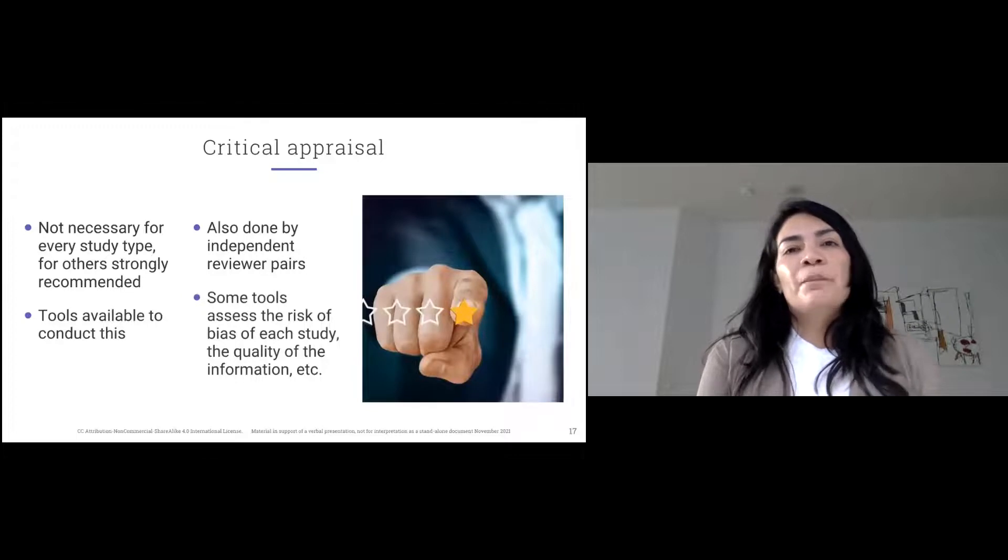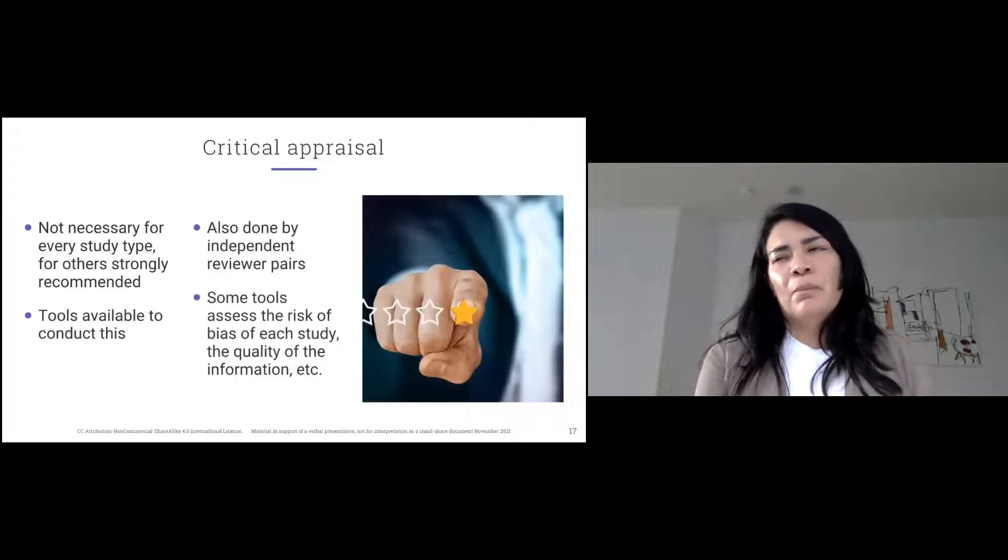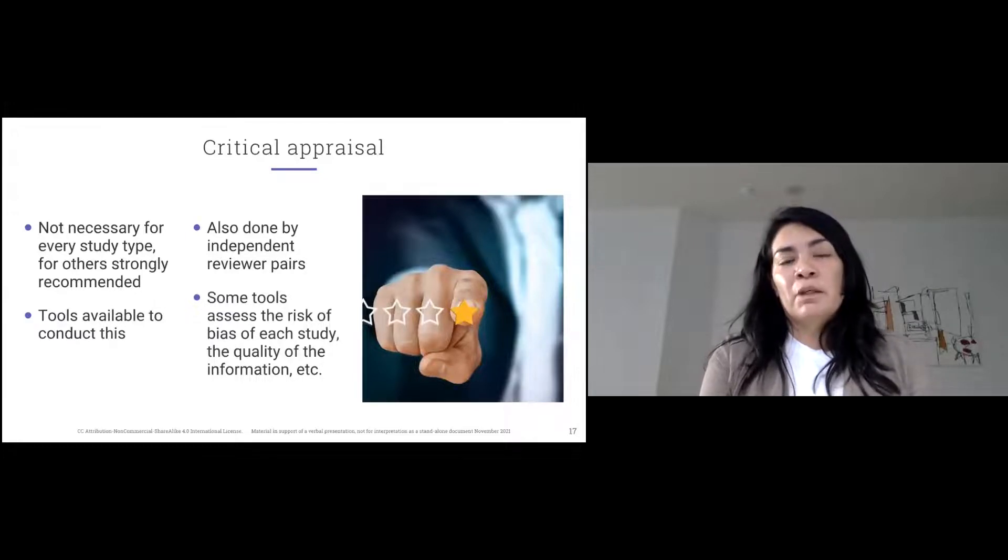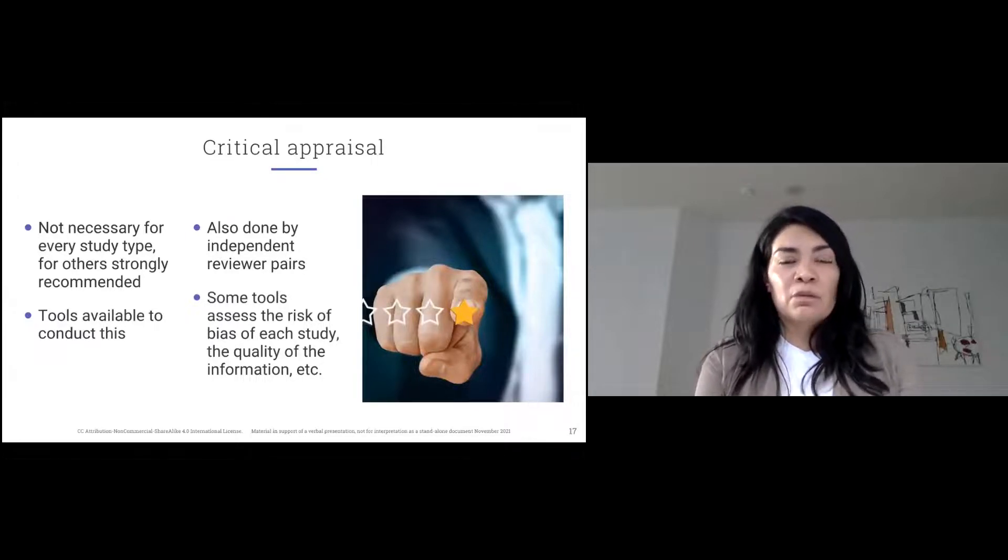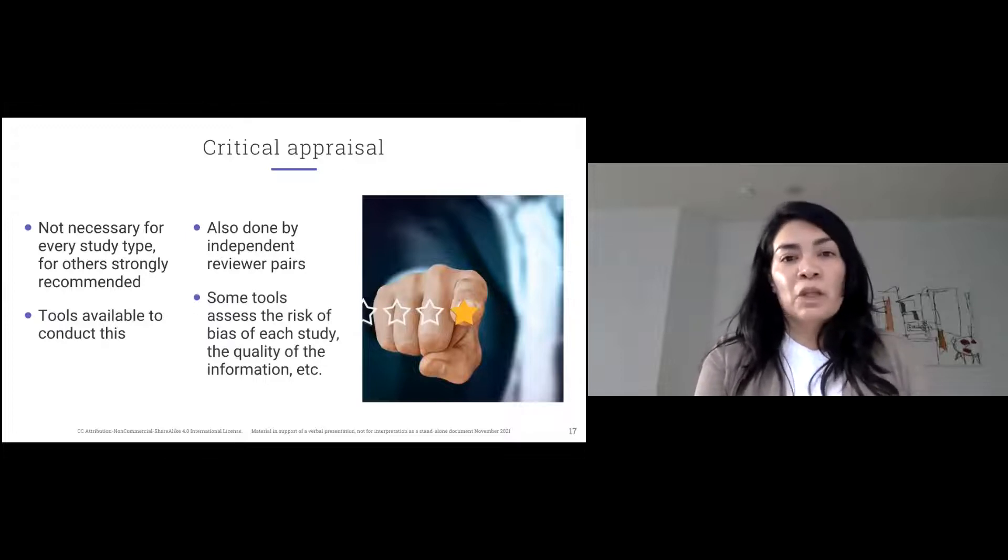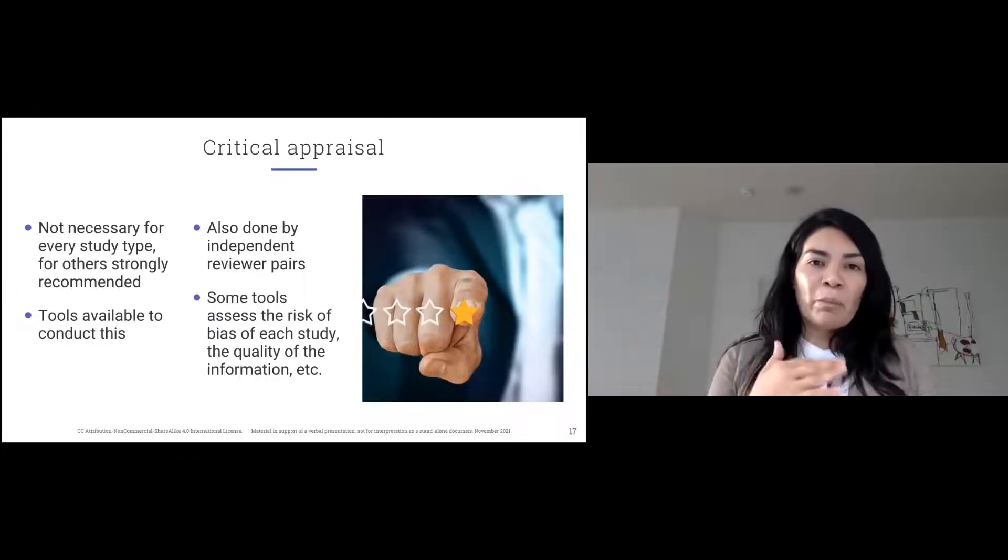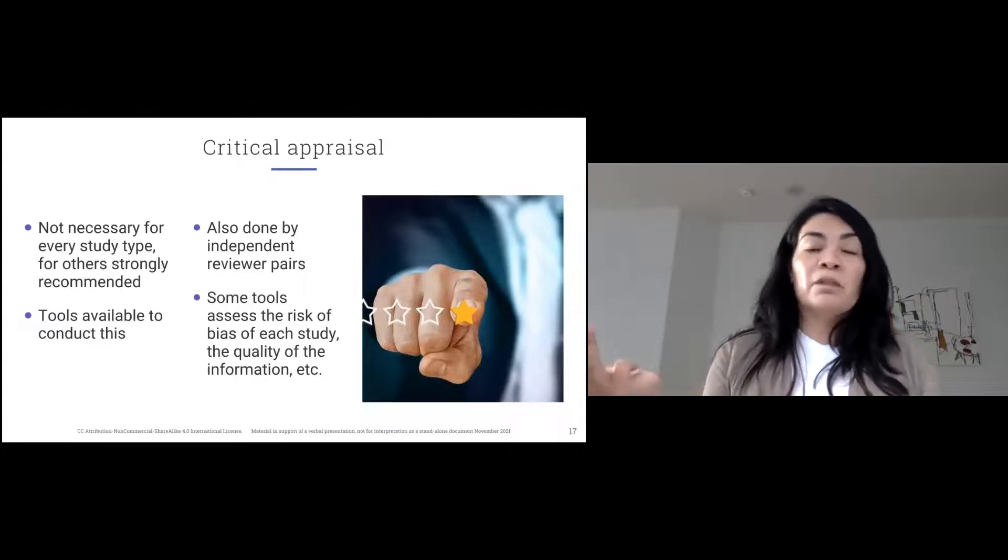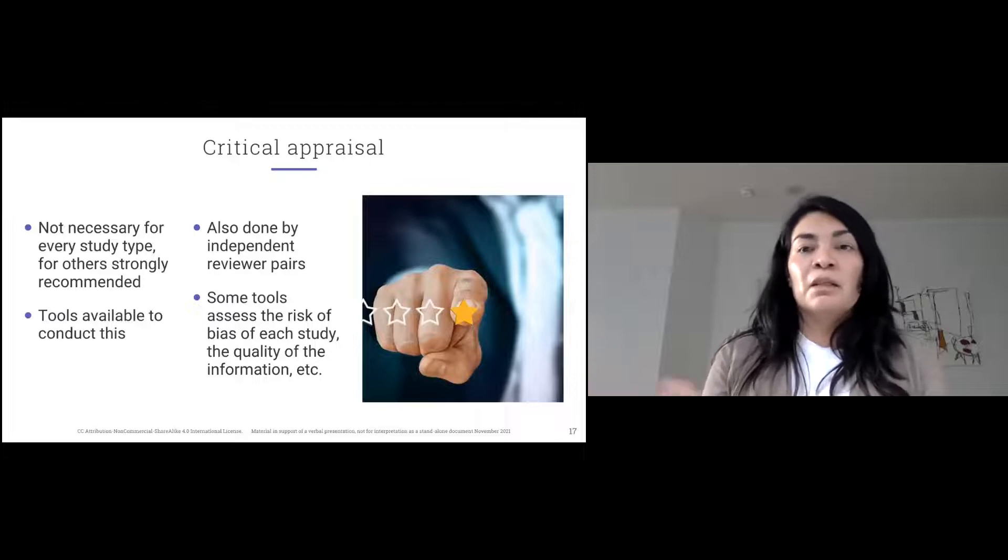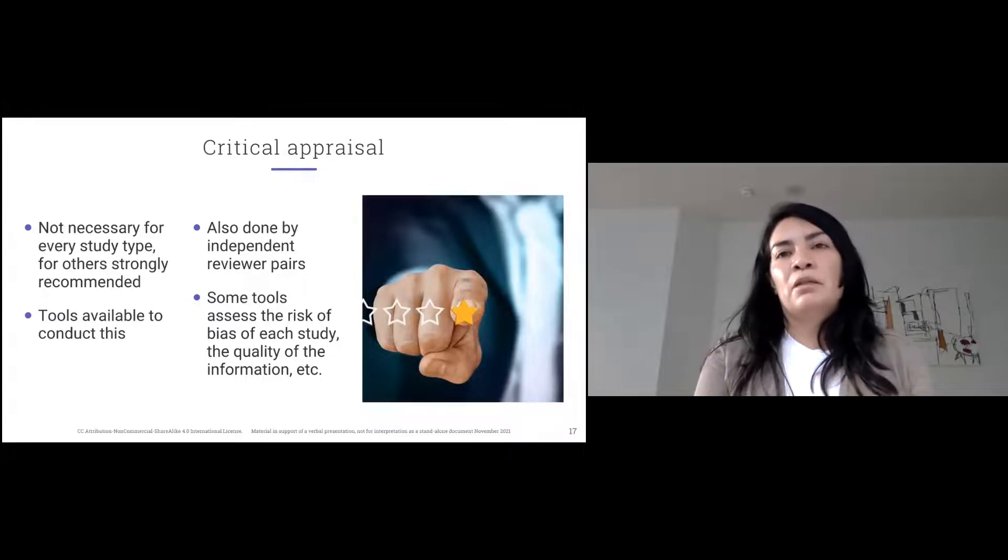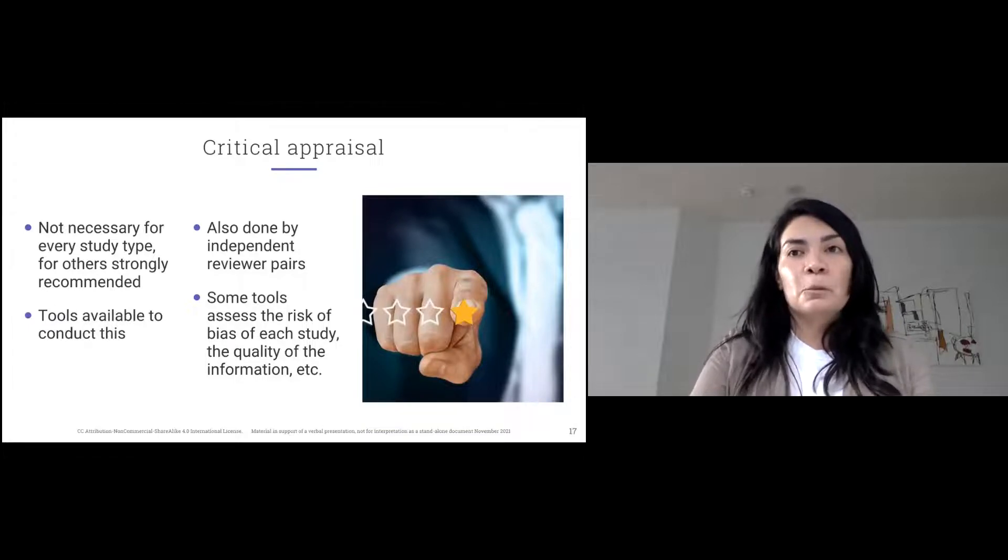Critical appraisal is not necessary for most knowledge synthesis types, actually. It's absolutely necessary and built into the methods for systematic reviews and meta-analysis. There's tools that exist in the form of checklists that assess the risk of bias of each study. You can perform it for other KS study types, like scoping reviews, but it's not written into the methods.